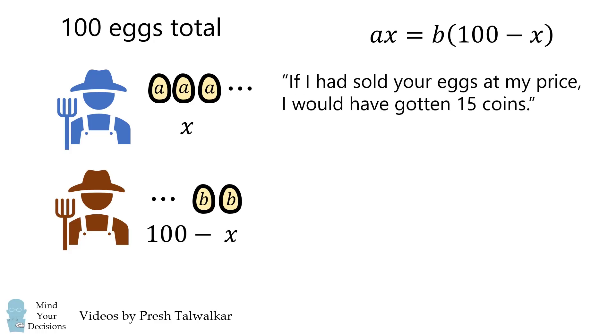The first farmer then remarked, if I had sold your eggs at my price, I would have gotten 15 coins. This means the price a multiplied by the quantity of the second farmer, 100 minus x, must be equal to 15.